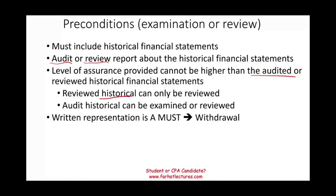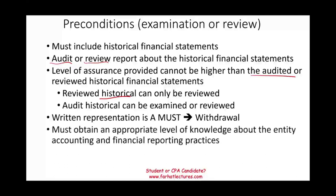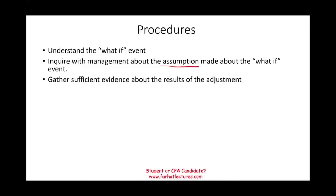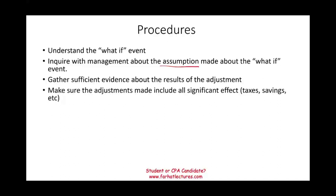The company must give you a written representation, telling you what they want you to do and what assumptions they are making — no written representation means you withdraw. You must also obtain the appropriate level of knowledge about the entity's accounting and financial practices. In terms of procedures: first, understand the 'what if' event. Inquire with management about the assumptions made. Gather sufficient evidence about the result of the adjustments.